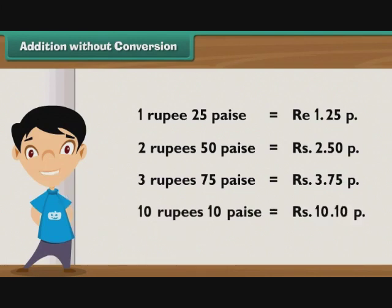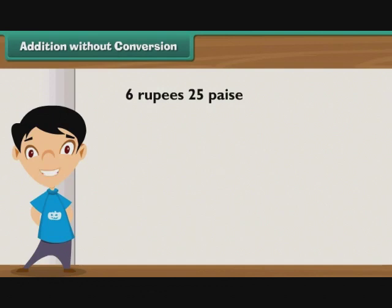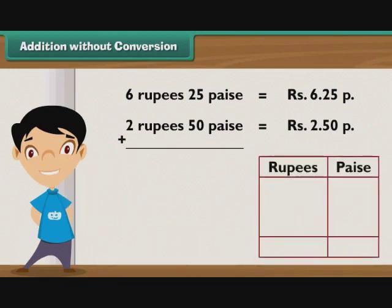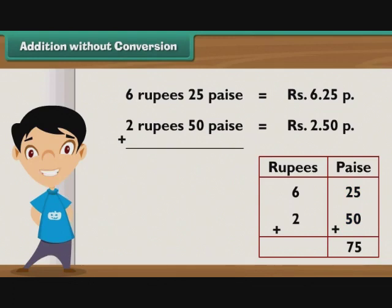Let us now perform additions without any conversions. Let's add 6 rupees 25 paise and 2 rupees 50 paise. First, write 6 rupees 25 paise as Rupees 6.25 P. Just below it, write 2 rupees 50 paise as Rupees 2.50 P, in such a way that the rupee part falls in the rupee column and the paise part falls in the paise column. Step 1: Add the numbers in the paise column. 25 plus 50 is equal to 75. Write 75 in the paise column. Step 2: Add the numbers in the rupees column. 6 plus 2 is equal to 8. Write 8 in the rupees column.